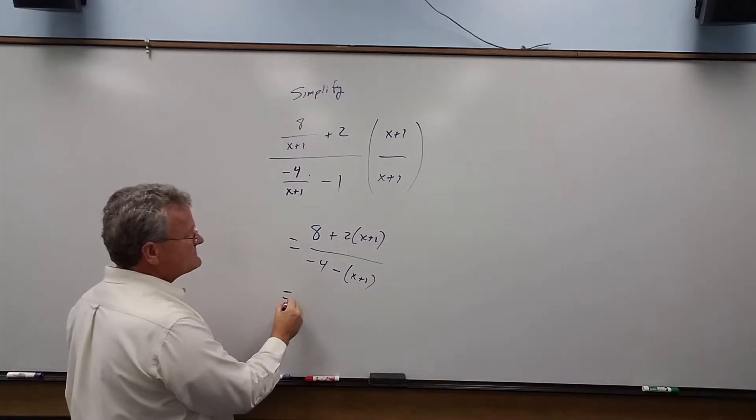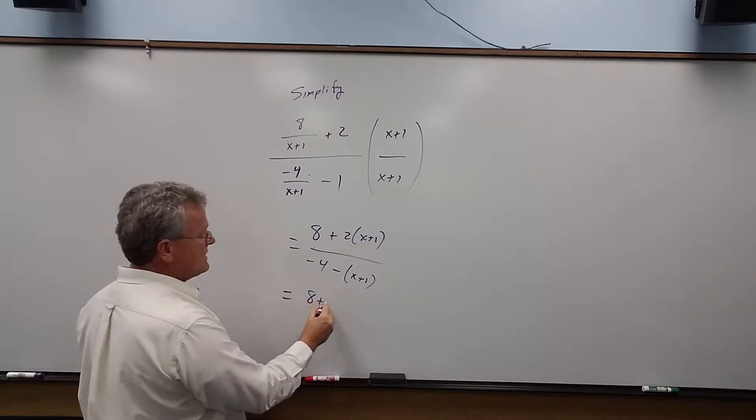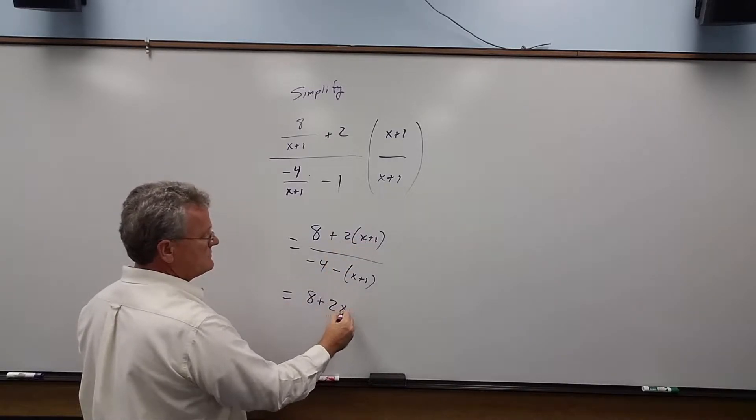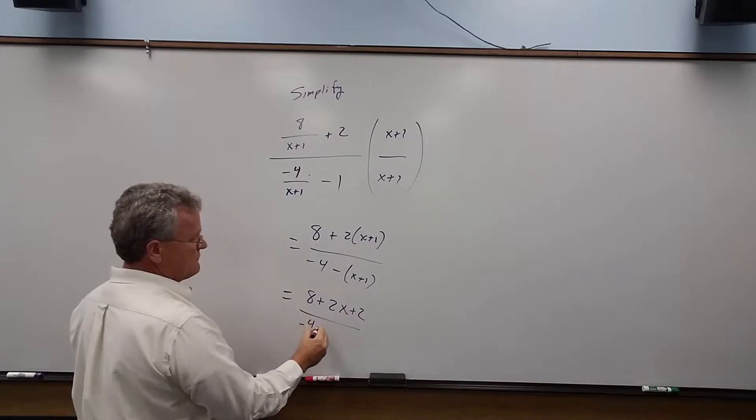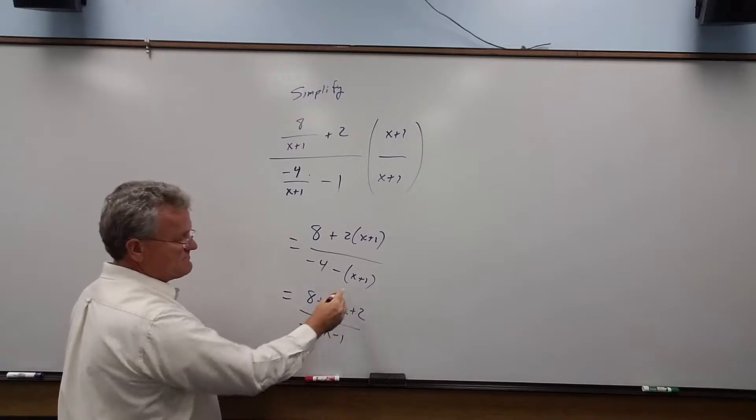Let's simplify this further. We have 8 plus 2x plus 2, and on the bottom we have minus 4 minus x minus 1.